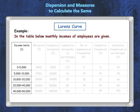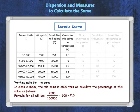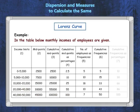Calculate the midpoints of the income limits as shown in column 2. Calculate the cumulative midpoints of the income limits as shown in column 3. Calculate the percentages of cumulative midpoints as shown in column 4. Calculate the cumulative frequency from the frequency given as in column 6. The last step is to calculate the percentages of the cumulative frequency as given in column 7.